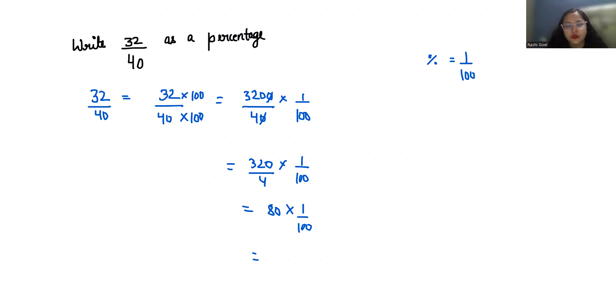a percent sign. So 32 by 40 in terms of percentage is 80 percent. I hope it's clear and you find it useful. Please give us a thumbs up and subscribe to my channel. Stay tuned for more upcoming videos.